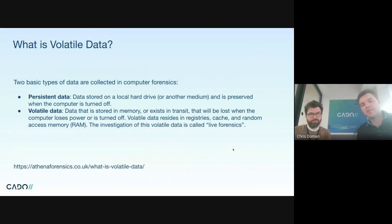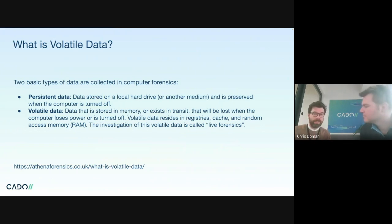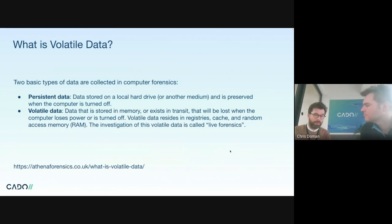What's the difference between volatile data and persistent data? Volatile data is data that is transient by nature - it's short-lived and it's not going to exist indefinitely. Whereas persistent data, an example being data on a hard disk, lives beyond a short period of time. Volatile data - a good example is memory - it only lives for the amount of time that it's needed.